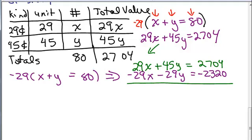And now when I add, these Xs cancel. So I have 45 minus 29, which is 16Y equals, and then I have to do this subtraction over here, which is 384.